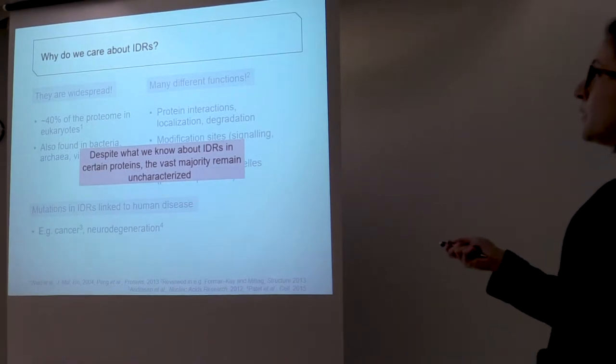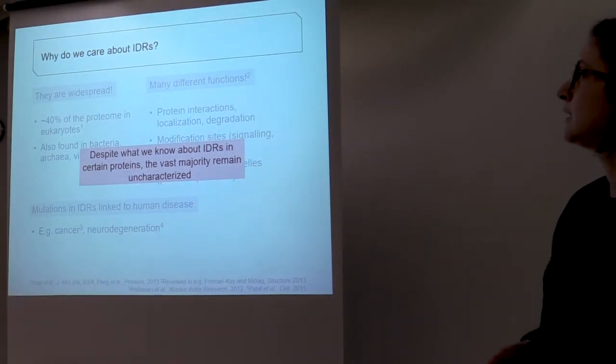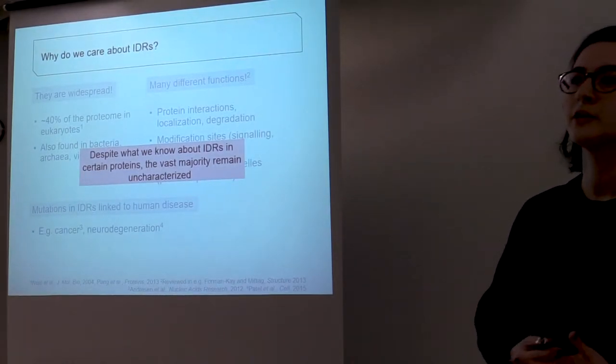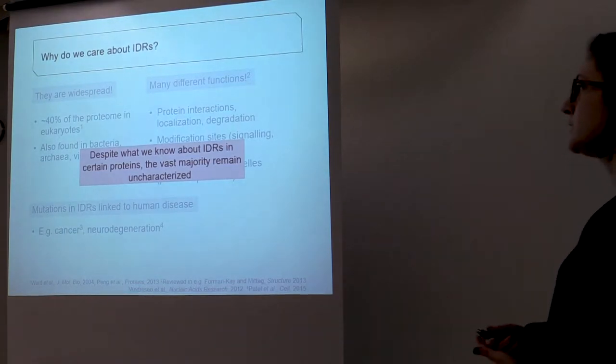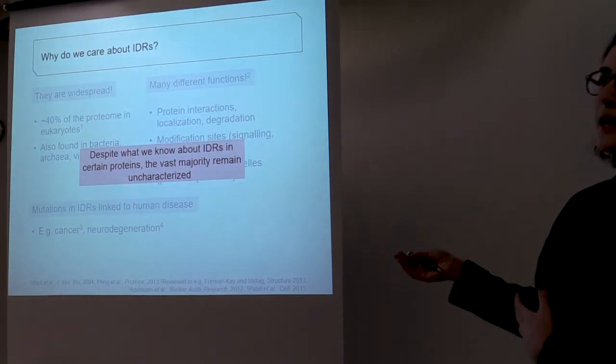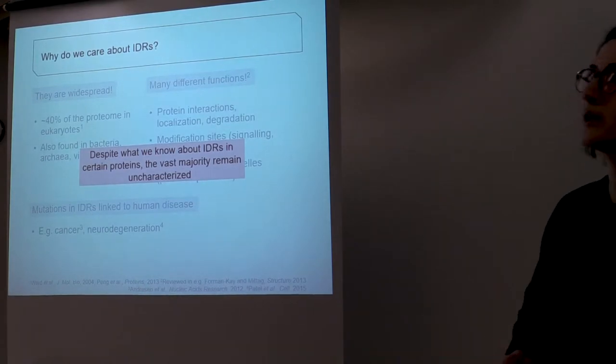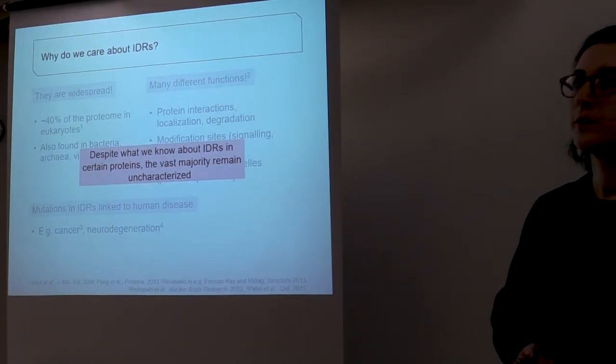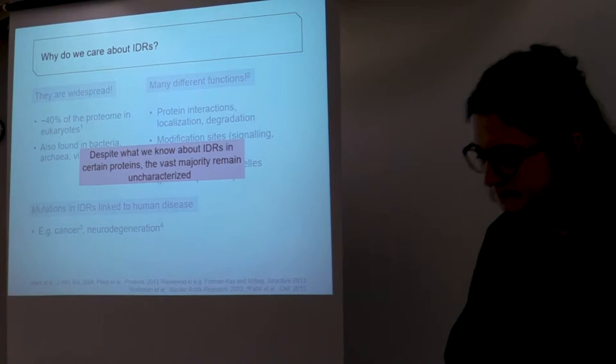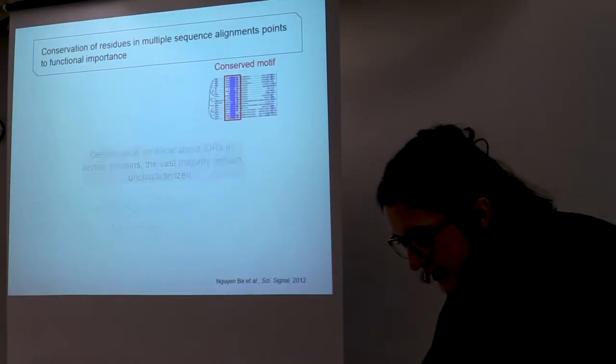So despite what we know from individual studies in proteins that have disordered regions, despite this knowledge that we have, the vast majority of these regions actually remain uncharacterized. So why could that be?